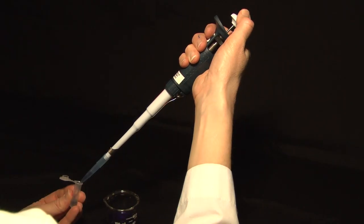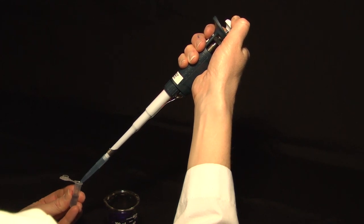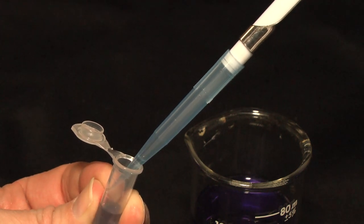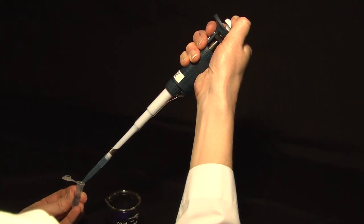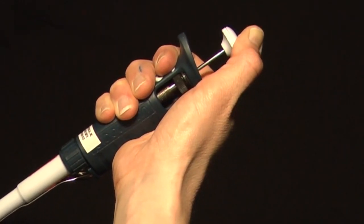To dispense liquid from the tip, depress the plunger slowly to the first stop. Pause, and then press to the second stop to purge the rest of the liquid out of the plastic tip. With the plunger still pressed down, remove the tip from the liquid, and then allow the plunger to return to the up position.